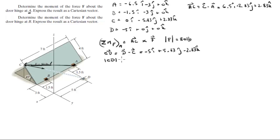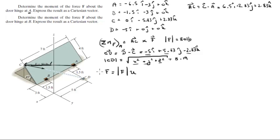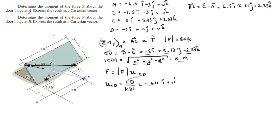Next we find the magnitude of CD, given by the square root of the x, y, and z components squared. Plugging in the three values gives a magnitude of CD equal to 8.19. The Cartesian vector form of F is the magnitude of F times the unit vector of CD. Dividing each component of CD by its magnitude gives the unit vector: negative 0.611i plus 0.712j minus 0.346k.